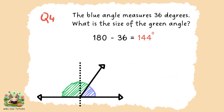Question four. The degrees along a straight line add up to 180. So we simply needed to subtract 36 from that to get an answer of 144 degrees.